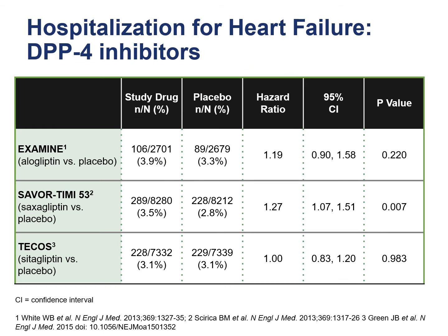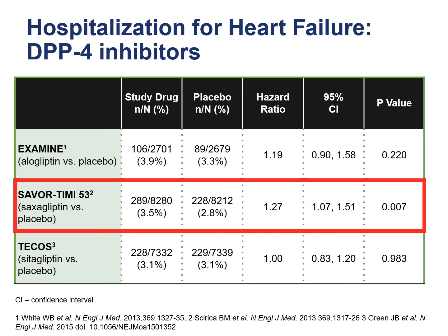DPP-4 inhibitors have been studied for cardiovascular outcomes in three clinical trials: the EXAMINE trial examined alogliptin, the SAVOR-TIMI 53 trial studied saxagliptin, and the TECOS trial studied sitagliptin — all for cardiovascular safety. All three agents met pre-specified cardiovascular safety outcomes but did not demonstrate superiority. Importantly, in the SAVOR-TIMI 53 trial, there was a 27% increased risk of heart failure hospitalization, which was statistically significant. As a result, saxagliptin should be avoided in patients with pre-existing heart failure and renal dysfunction.